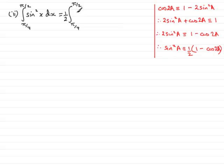And then in here we have 1 minus cos 2x, and don't forget to write the dx on the end.